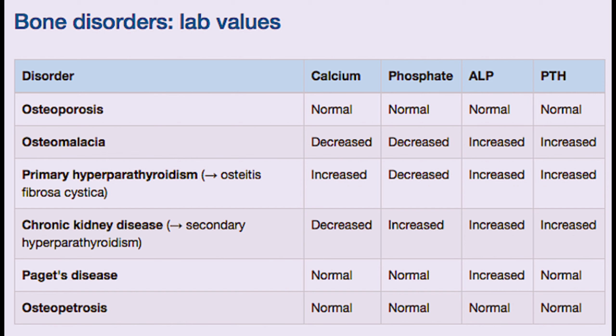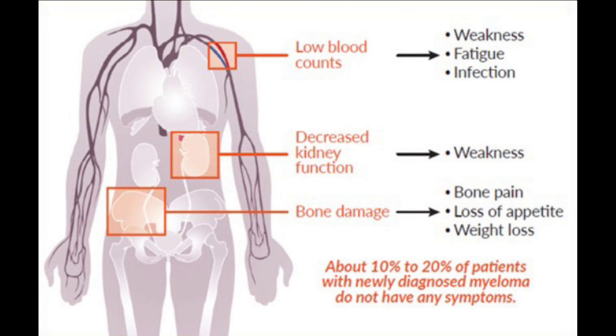Bone metastasis most commonly comes from prostate cancer in males and breast cancer in females. If a patient with prostate or breast cancer presents with polydipsia, polyuria, and bone pain — check calcium. If there is hypercalcemia with confusion, constipation, and on ECG a short QT interval, this confirms a case of hypercalcemia.